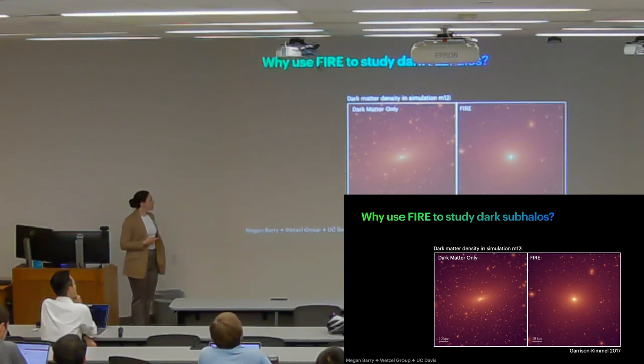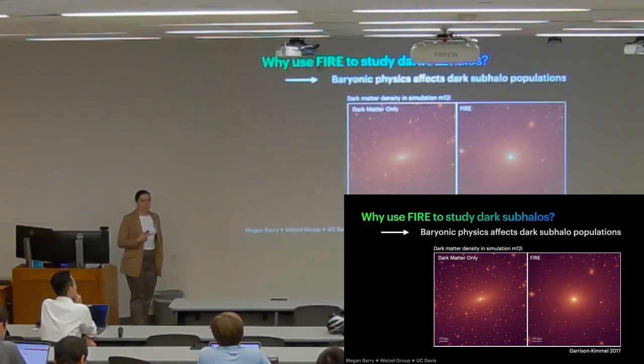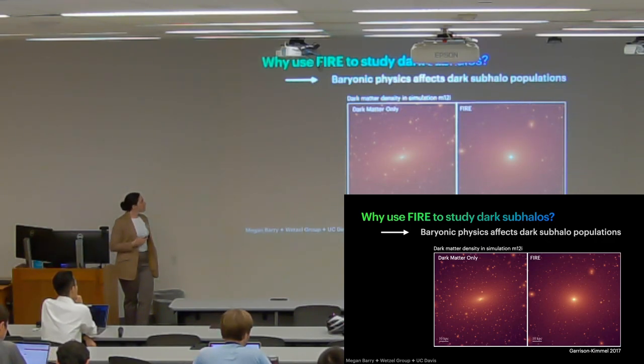So you will not get accurate results if you use a DMO simulation. And as Garrison Kimmel showed, this is primarily due to the presence of the milky way disk just giving that extra concentrated gravitational potential.